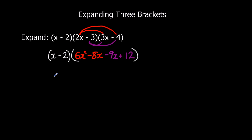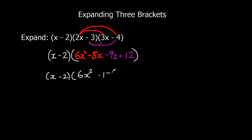Collecting the like terms: we've only got one x squared term, so 6x squared. Then negative 8x take away another 9x — so negative 8 take away another 9 takes us to negative 17x. And we've got 12 by itself.